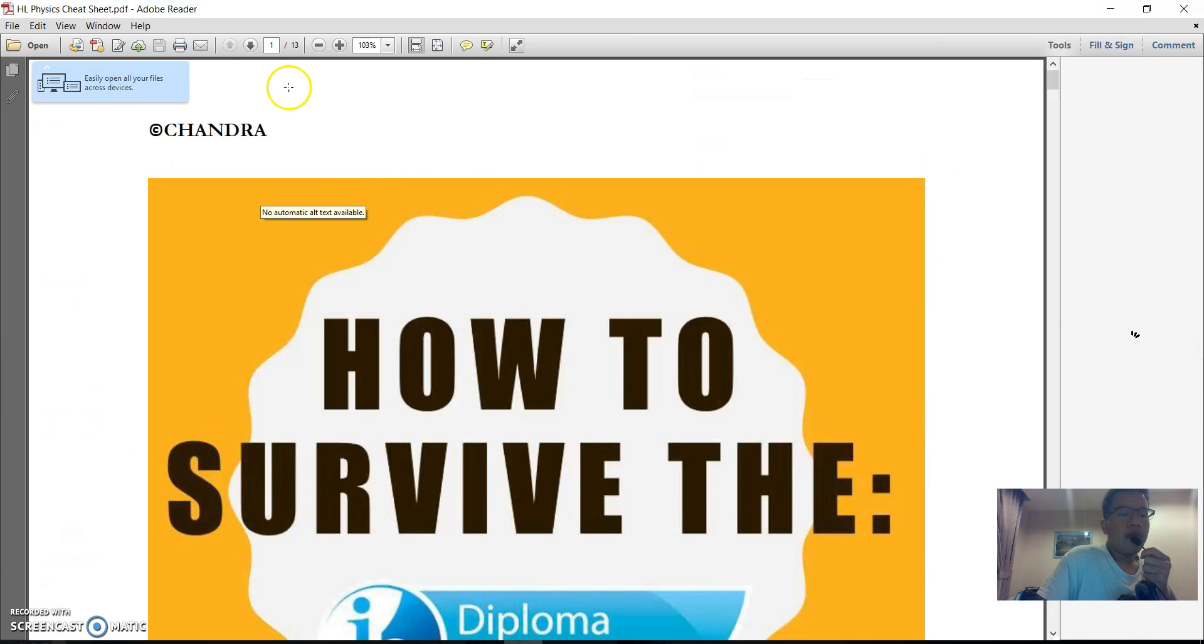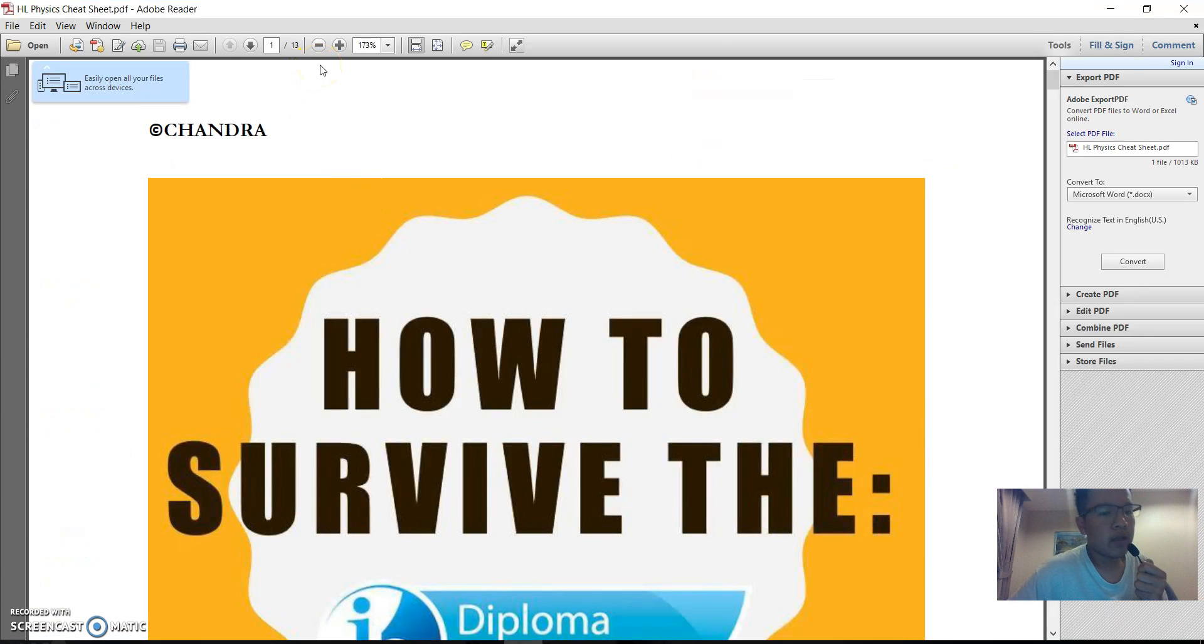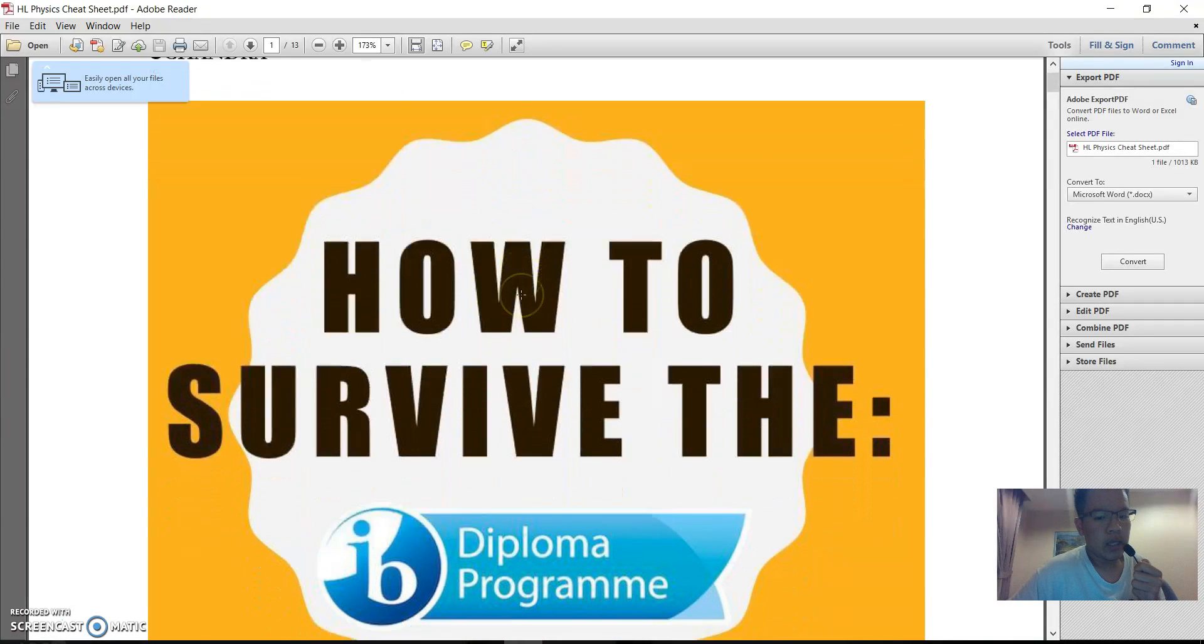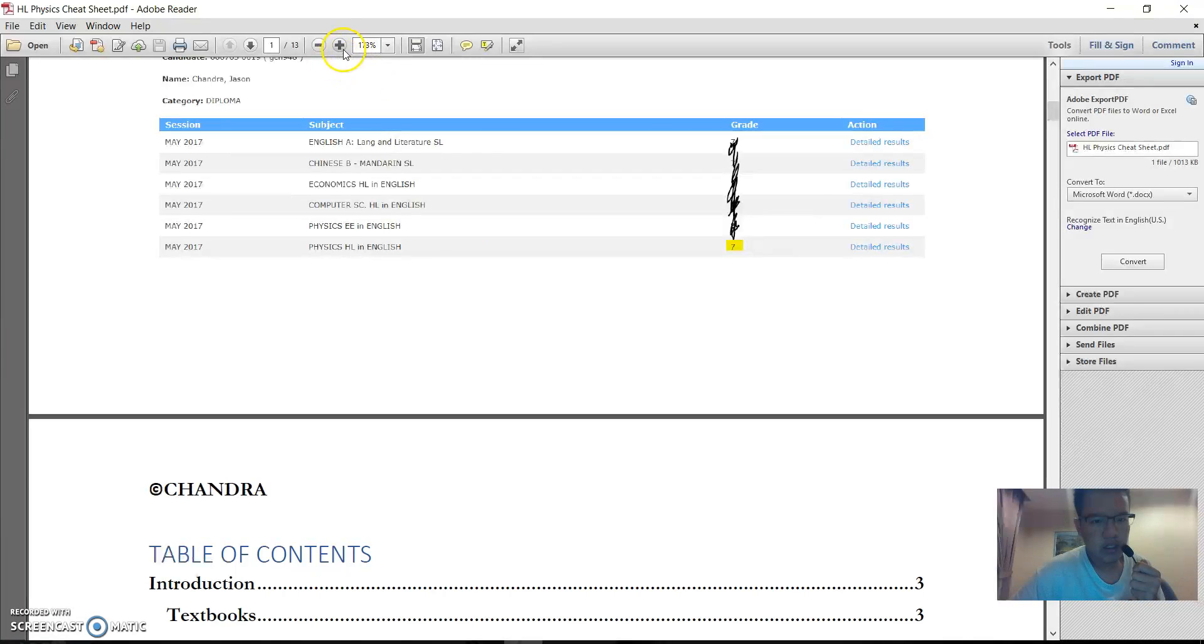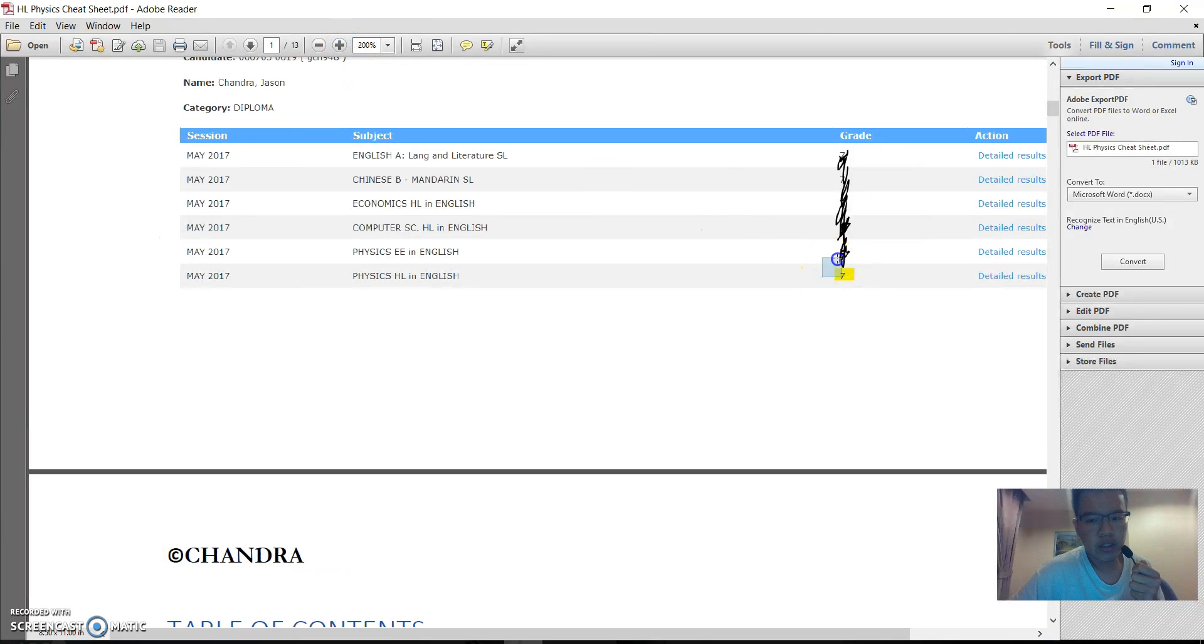Hello everyone, and this will be a video tutorial on how I got level 7 in my HL physics. So as you can see in my diploma grade, you can see that level 7.